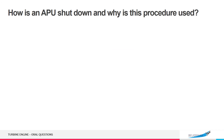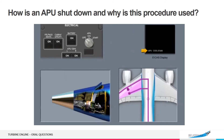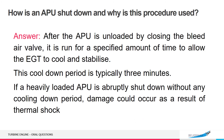How is an APU shut down and why is this procedure used? After the APU is unloaded by closing a bleed air valve, it is run for a specified amount of time to allow the EGT to cool and stabilize. This cool-down period is typically 3 minutes. If a heavily loaded APU is abruptly shut down without a cooling-down period, damage could occur as a result of thermal shock.